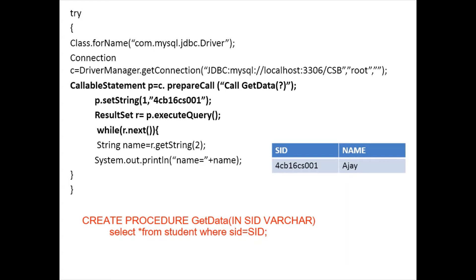Once the question mark has been replaced with the value, the query is executed and the result is stored in the ResultSet. Control is transferred to the stored procedure, which checks whether the USN is available in the table. If it is, the procedure returns the name of that USN. The ResultSet points to the particular row; the next() method always points to the current row. To retrieve the value from the corresponding row, we use the getX method — here getString(2), since index 2 of the table is the name column. That result is stored in the variable 'name' and then printed.